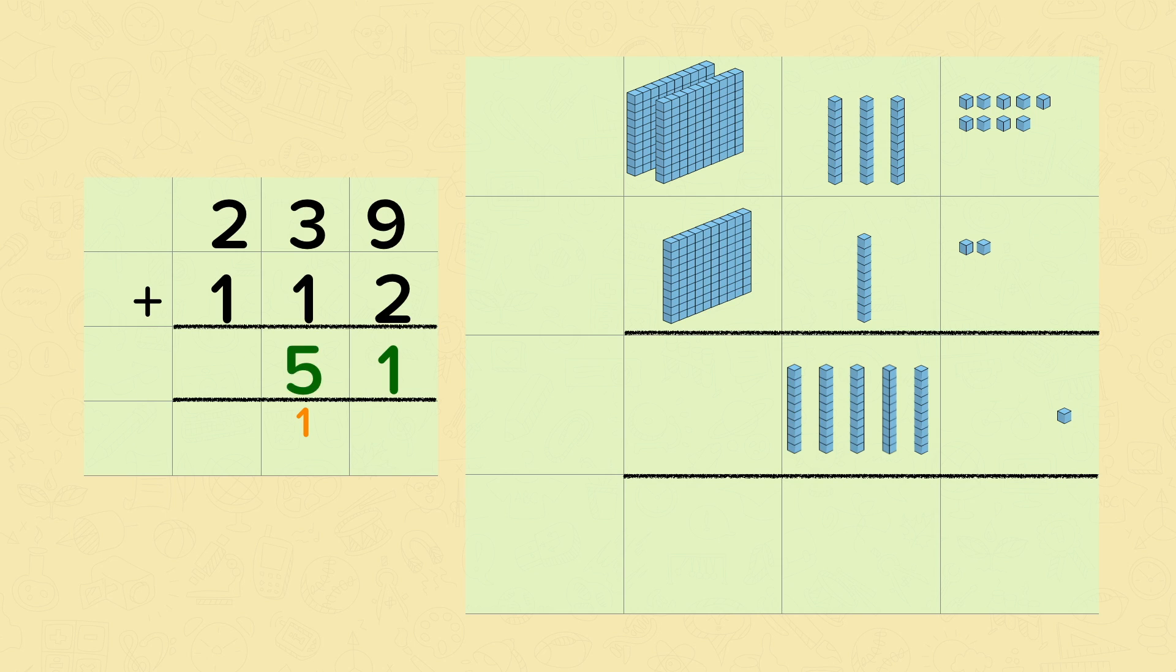And then we add our hundreds. Two hundred, add one hundred, is three hundred. So the answer is 351.